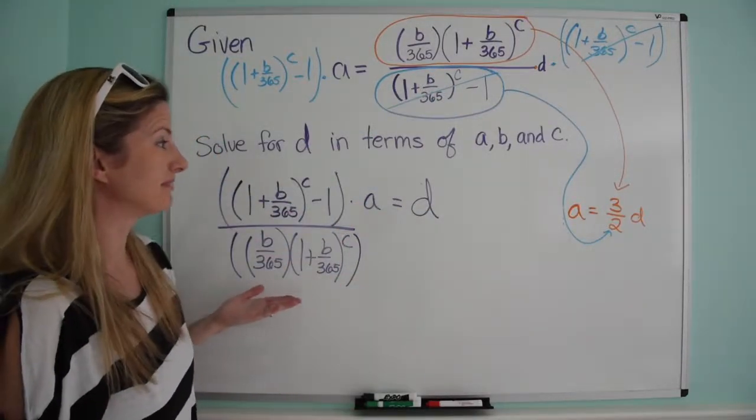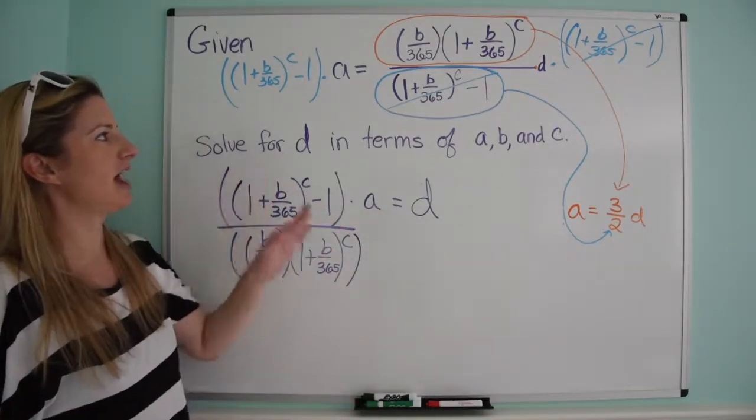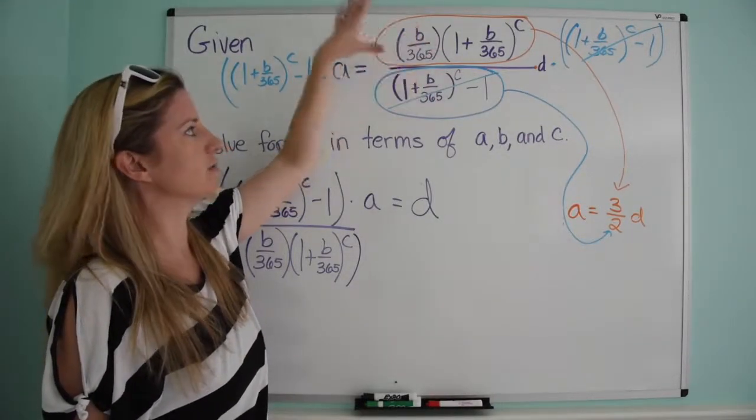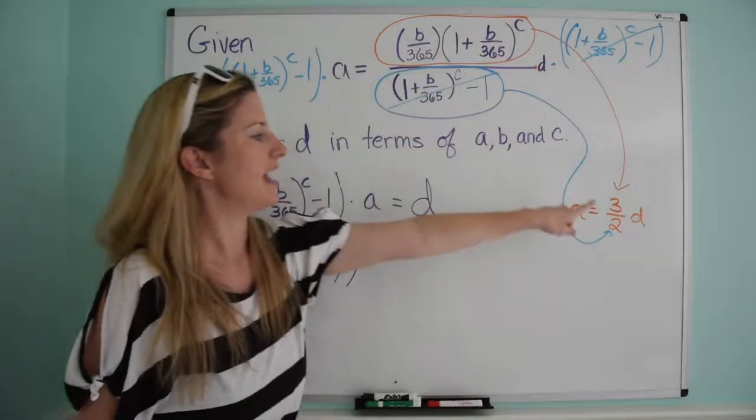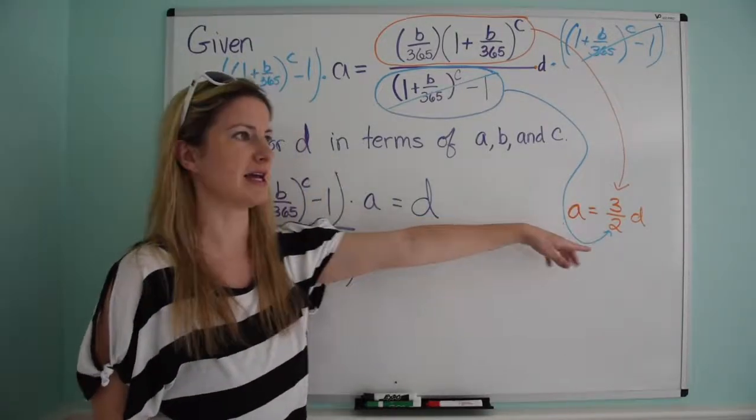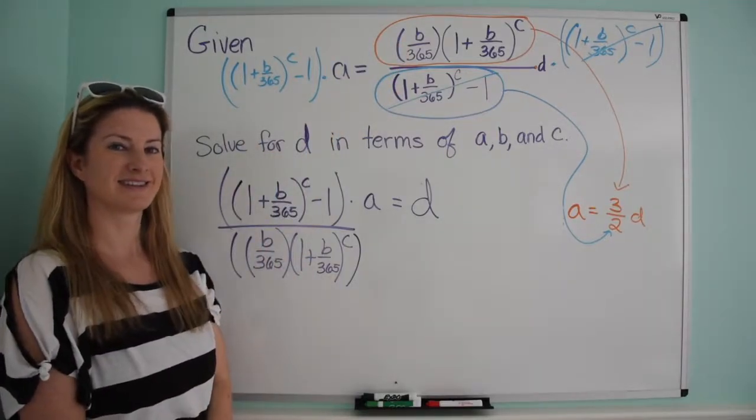So here you go. Looked really difficult, turned out to be rather easy, and the only suggestion I have for you is just don't get distracted by all of the variables, and the exponents, and the fractions, and see if you can break it down into something simple. If you can solve something simple like this, you can also solve something more complex like this. So there you go.